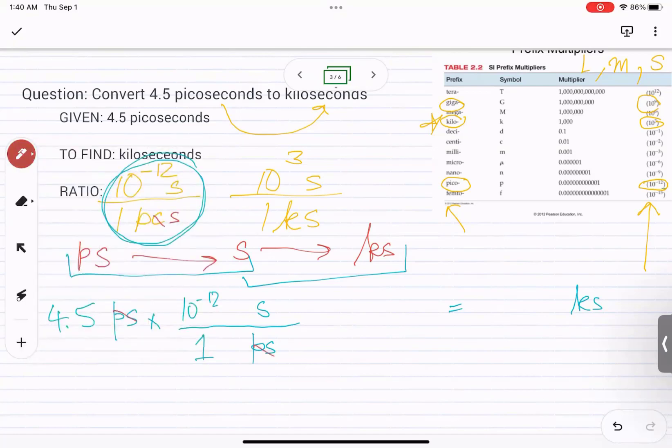So then we can go ahead and do times. We want the seconds to cancel out and we want kiloseconds to remain. So this is the relationship between that. Can we write this exactly as it is over here?